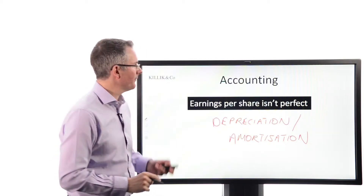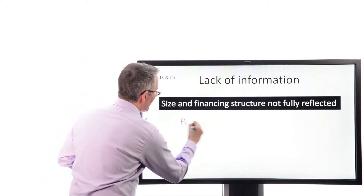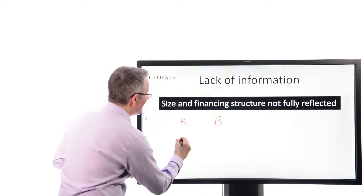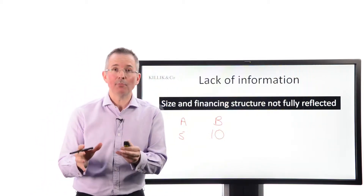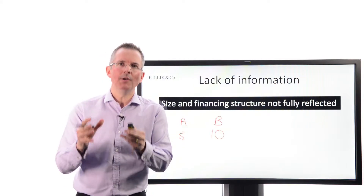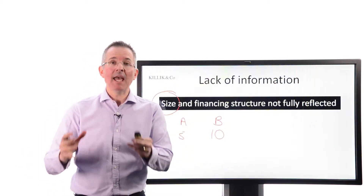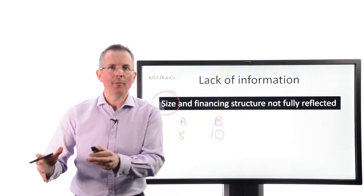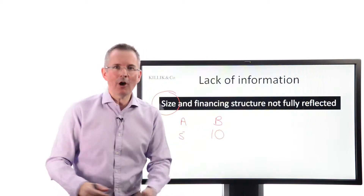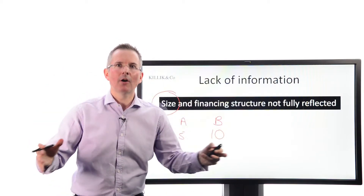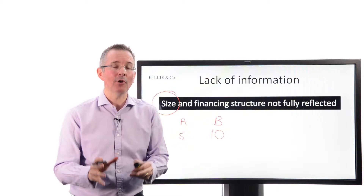Problem number three: lack of information. For example, if I tell you two firms — A and B — have PE ratios of 5 and 10 respectively, using very simple made-up numbers, how much information does that actually communicate? The answer is not very much. It tells you nothing about the size of A and B. For all you know, A might be a minnow with a market capitalization of 10 million, whereas B has a market cap of 500 million.